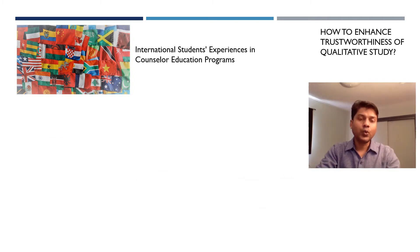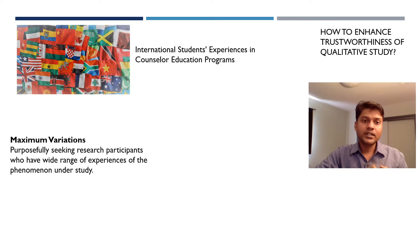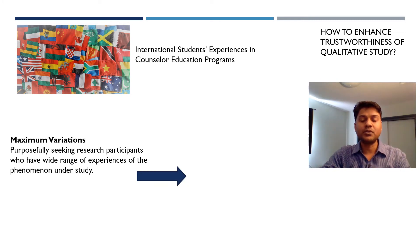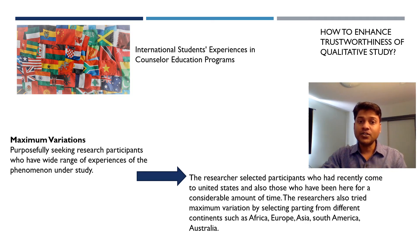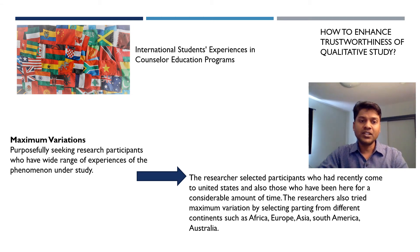Another way of improving trustworthiness is maximum variation. As a researcher, you purposefully seek participants who have a wide range of experience of the phenomenon you are interested in exploring. Using the example of international student experiences in counselor education programs, to achieve maximum variation in participant selection, I can select participants from various locations — one from Asia, one from South America, Africa, or Australia — to create variation in terms of where they came from.